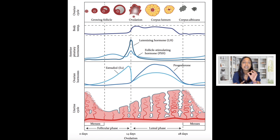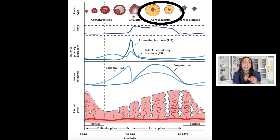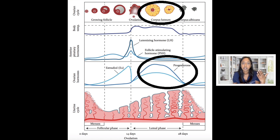Once the sperm fertilizes the egg, it becomes an embryo. The embryo will travel the rest of the distance down the tube and implant in the uterus. The follicle that was previously growing the egg, after ovulation, collapses and becomes what we call the corpus luteum. That corpus luteum is producing estrogen and progesterone to support a theoretical pregnancy.